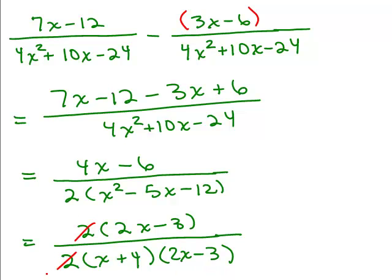I can cancel out the 2s. I could cancel out the 2x minus 3s. So I'm left with just a 1 in the numerator and an x plus 4 in the denominator.